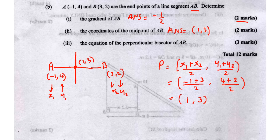The midpoint is called point P, with coordinates (1, 3). Part 3 asks us to find the equation of the perpendicular bisector of AB. So what do we mean by perpendicular bisector? There are actually two things in one there.